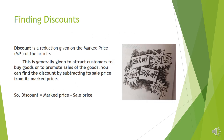Now let us see finding discounts. Discount is a reduction given on the marked price of an article. Marked price can be written in short form as MP. You can see advertisements like 25% off, 50% off — this is a method used by sellers to attract customers. If we know the marked price and the sale price, discount equals marked price minus sale price. For example, if marked price is Rs 500 and sale price is Rs 400, discount is Rs 100.